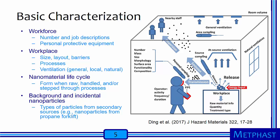Basic characterization is a crucial step in the design of an effective sampling strategy. Information is needed to characterize the workforce, including the number of workers, their job descriptions, and whether they use personal protective equipment. We also need to characterize the workplace, including the size, layout, and barriers in place in the facility, as well as what processes are used and what ventilation is in place, which may include general, local, and/or natural ventilation.